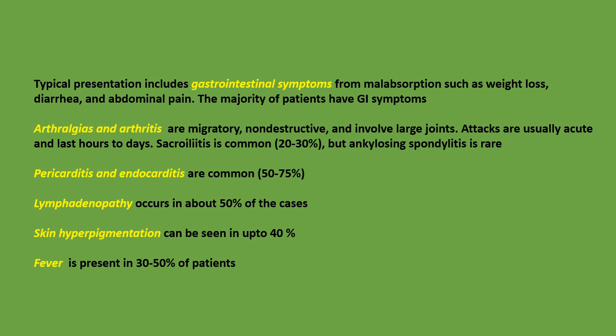Typical presentation includes gastrointestinal symptoms from malabsorption such as weight loss, diarrhea, and abdominal pain. The majority of patients have GI symptoms. Arthralgias and arthritis are migratory and non-destructive, involving large joints; attacks are usually acute and last hours to days. Sacroiliitis is common, but ankylosing spondylitis is rare.